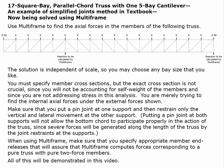The solution is independent of scale, so you may choose any bay size that you like. I'm going to set this up with each bay equal to 1 foot. You can make it 5 feet, 10 feet, or whatever — the results will be the same because everything is based on proportioning. As long as we have a 17-bay truss with a 5-bay cantilever, all bays are square, and the webs go in the indicated direction, we'll get exactly the same result regardless of scale, provided we apply 1k on interior joints and half a k on end joints.